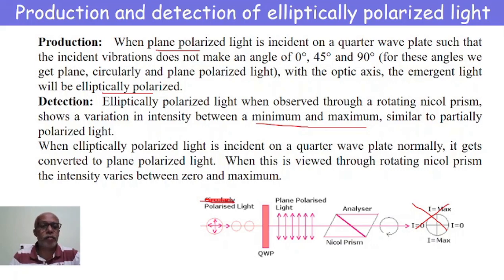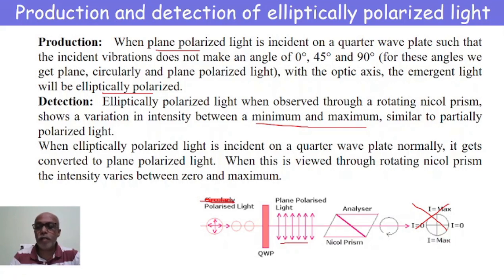This elliptically polarized light is again made incident normally on a quarter wave plate, as in the case of circularly polarized light. It gets converted back to plane polarized light. When this plane polarized light is made to pass through a rotating Nicol prism, the intensity varies between zero and maximum. This concludes the production and detection of elliptically polarized light.